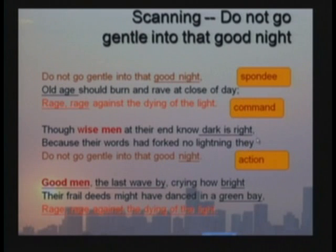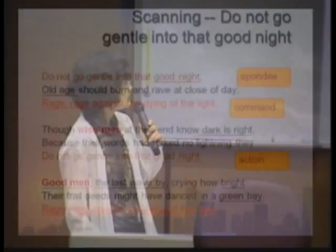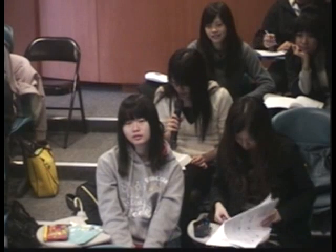你稍微停一下，讓韻的效果出來。Could you read it again? 'Do not go gentle into that good night, / Old age should burn and rave at close of day; / Rage, rage against the dying of the light. / Though wise men at their end know dark is right, / Because their words have forked no lightning, / Do not go gentle into that good night. / Good men, the last wave by, crying how bright / Their frail deeds might have danced in a green bay, / Rage, rage against the dying of the night.'